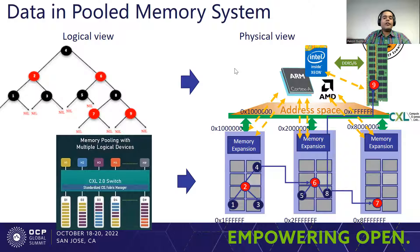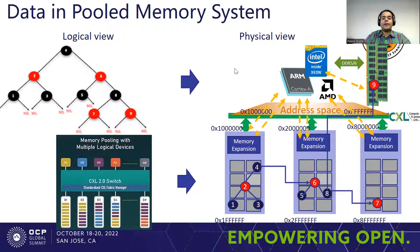A memory region may look contiguous to an application but may be physically fragmented and distributed in the real world. This presents a new type of challenge as applications will start experiencing variable latencies and response times. Access latency of each memory device will depend on traffic load conditions, type of media attached to the device, controller characteristics, and even physical characteristics like thermal condition at that time. It is also possible that the same application sees a different access time for the same address region at different runtimes, making prediction of memory placement very difficult for system admins and application developers.